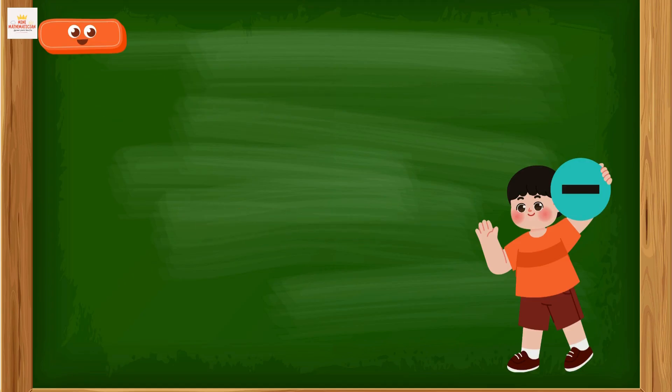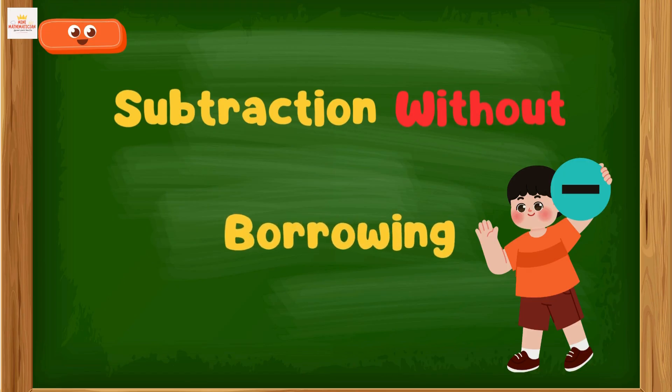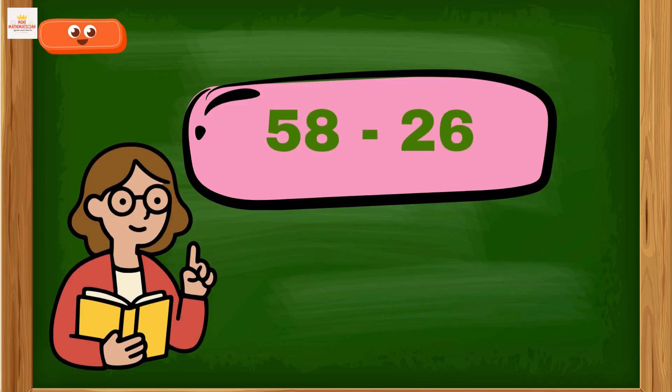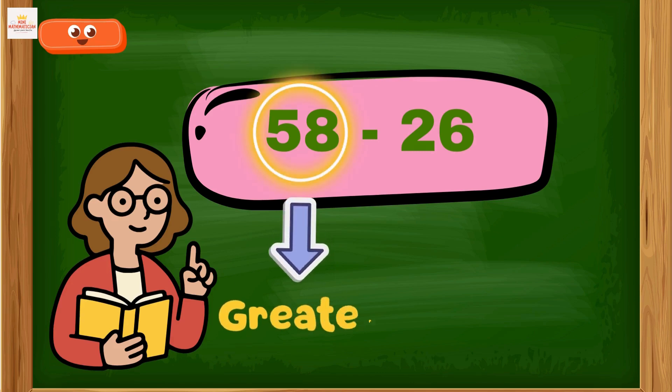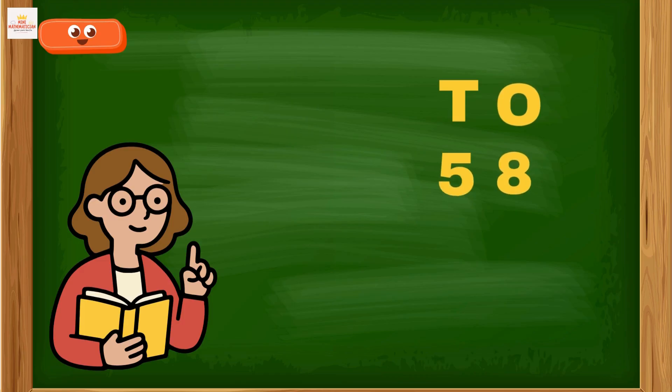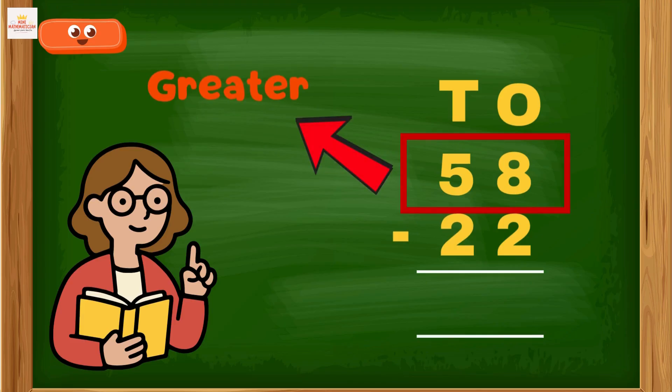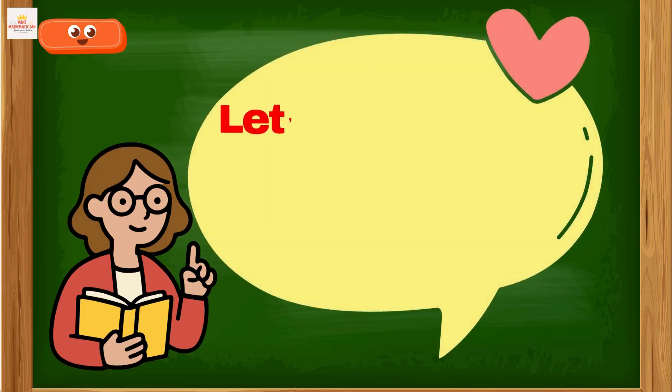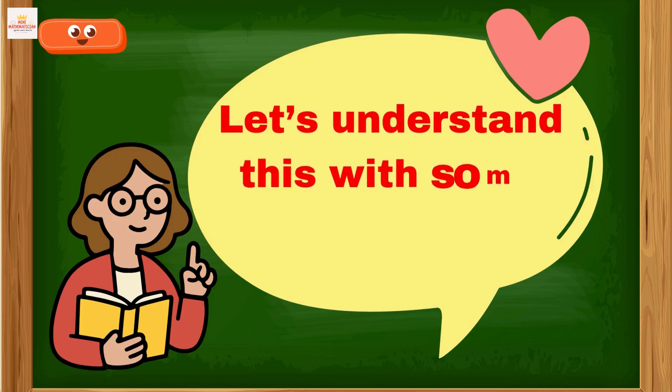Also called subtraction without borrowing. In subtraction without regrouping, the numbers before the minus sign are greater than the numbers after the minus sign, or we can say the top numbers should be greater than the bottom numbers. It means the number from which we have to subtract should always be greater.